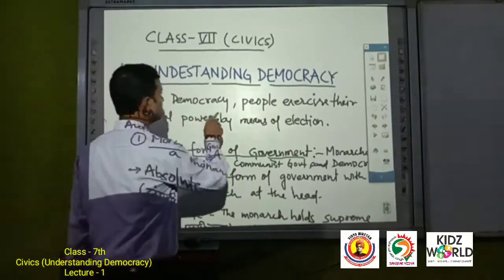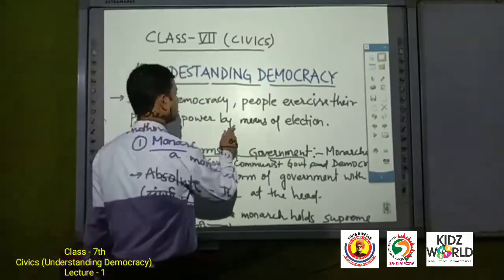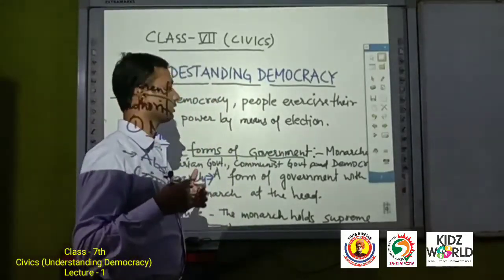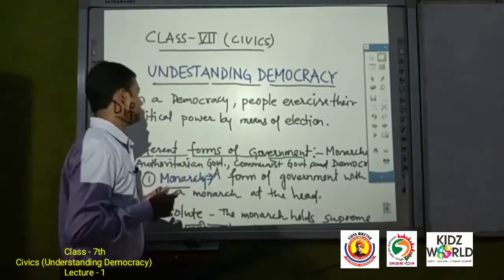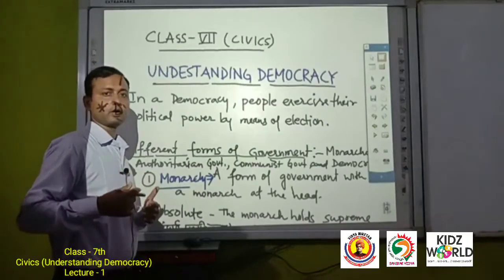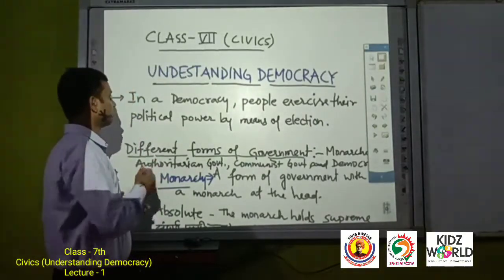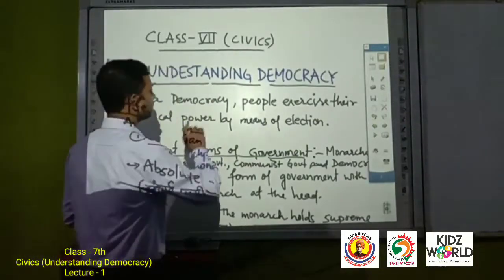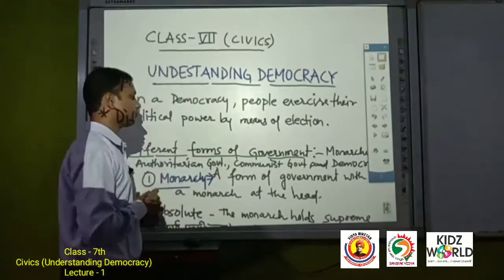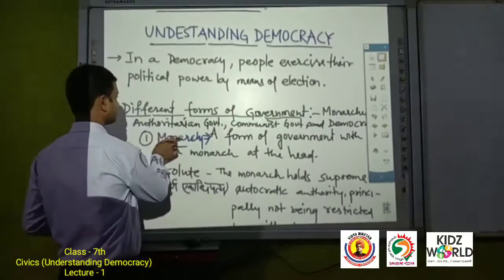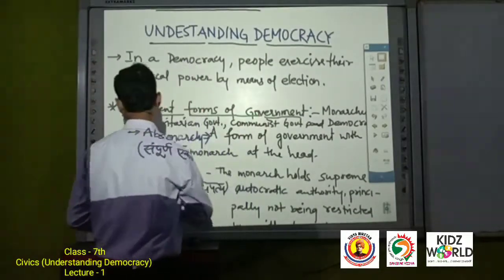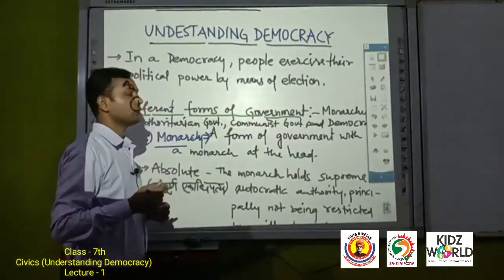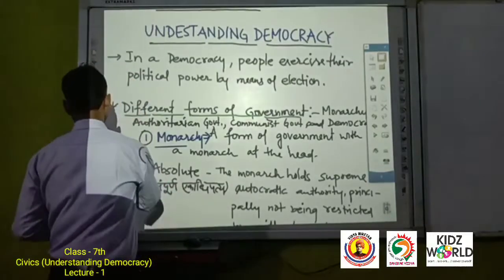In a democracy, people exercise their political power by means of election. In this Understanding Democracy chapter, I am going to teach you about different forms of government. There are four different types of government in civics, or we can say in political studies.